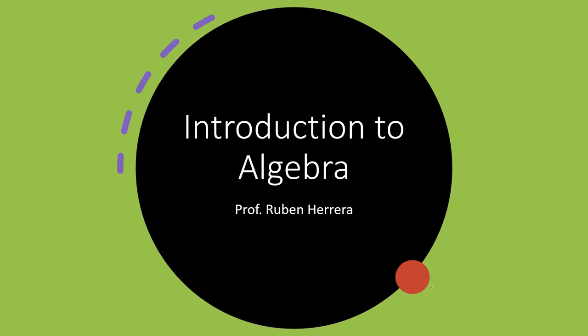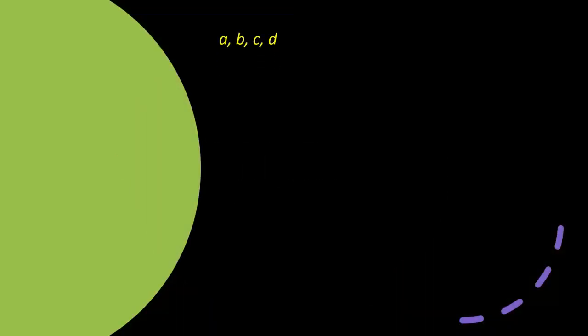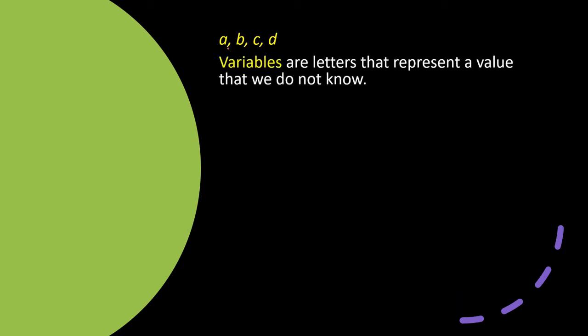First of all, in algebra we have letters — letters like a, b, c, d — and most of the time these are going to be lowercase letters. These letters in algebra we call variables. A variable is a letter which contains or has a value which we do not know, but we need that value.